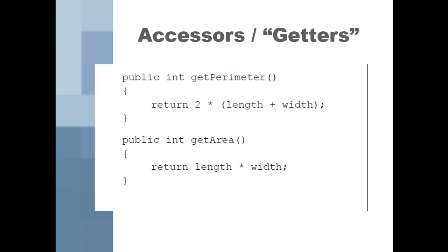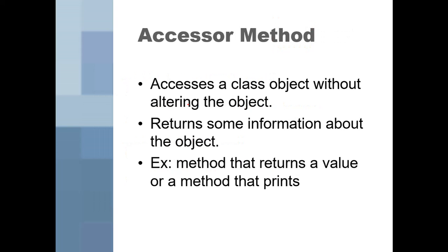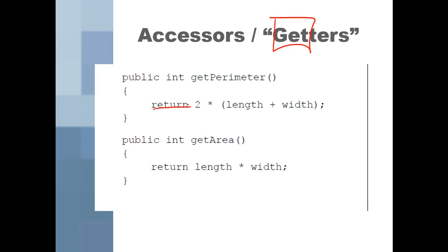The next kinds of things we're making are known as accessors — you may also hear these called getters because they get things. I have two methods: public int getPerimeter and public int getArea. An accessor method accesses a class's object without altering it. Usually it's going to return some information or print a value.